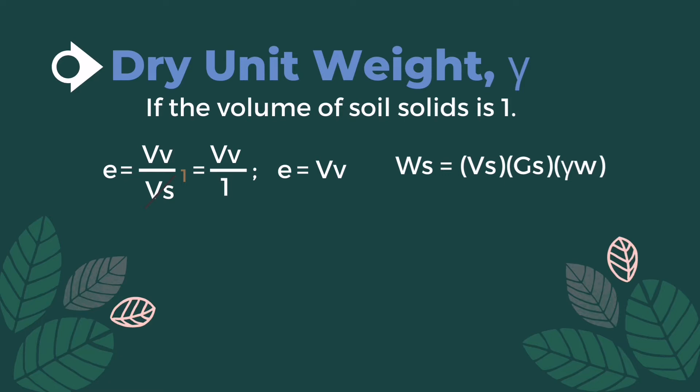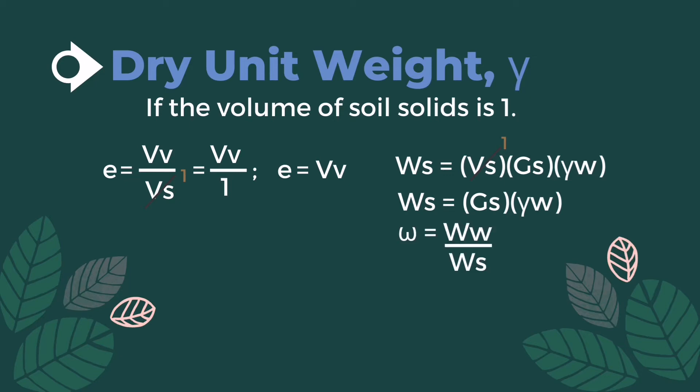Weight of solids is equal to volume of solids times specific gravity times unit weight of water. But volume of solids is equal to one, so weight of solids will be equal to specific gravity times unit weight of water. Moisture content is equal to weight of water divided by weight of solids.